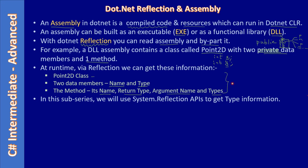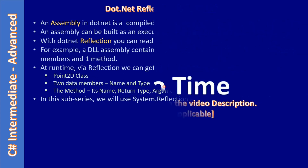We are talking about reading reflection type information at runtime, but you can even make calls to members. For example, if there is a public data member X, you can retrieve it and assign a value. Or if there is a method called AddPoints, at runtime you can get its type information, pass parameters, and get the return value — everything you can do at runtime. It's not static binding, it's dynamic binding. Calling methods and all that we will see in the next video.